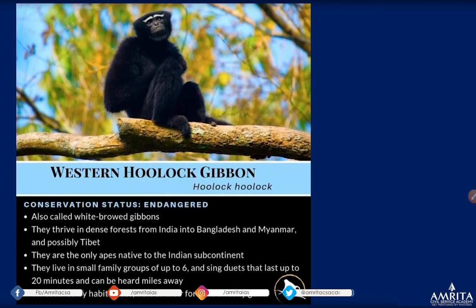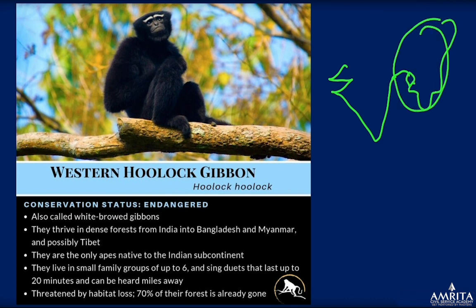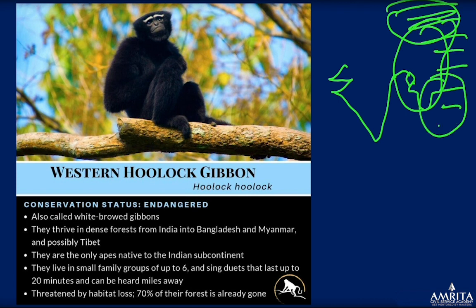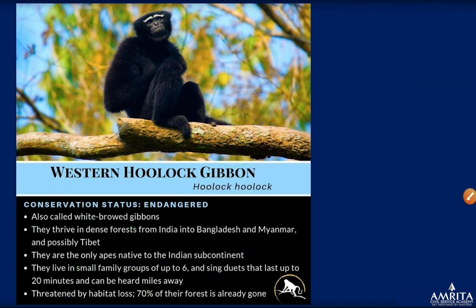To summarize the Hoolock Gibbon: it is found in northeast India, China, and Bangladesh. It is also called the white-browed gibbon. They thrive in dense forests from India into Bangladesh and Myanmar and possibly Tibet. They are the only apes native to the Indian subcontinent, live in small family groups of up to six, and sing duets lasting up to 20 minutes. They are threatened by habitat loss, which is why they are listed as Endangered.